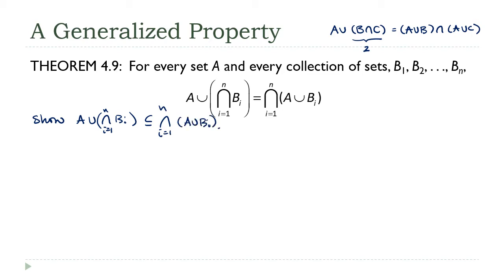Let X be an element of A union intersection B sub I. Then we've got two cases here. Either X is an element of A, or X is an element of that intersection.